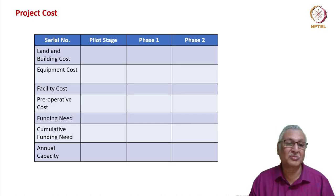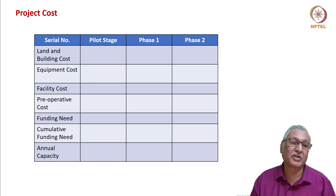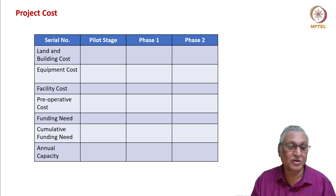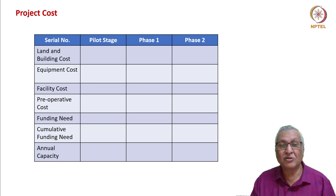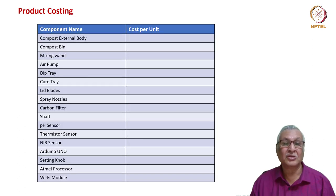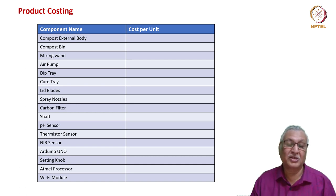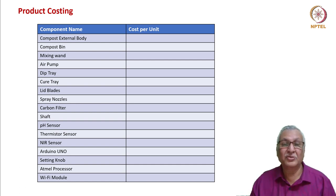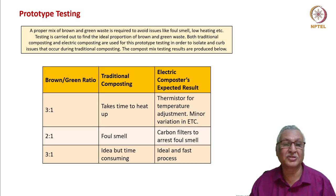Project cost is developed based on land and building cost, equipment cost, and facility cost, yielding pre-operative cost requirements. Funding needs are developed for pilot stage, phase one, and phase two on a cumulative basis, linked to annual capacity at each stage. Product costing is done component-wise, building value addition for each material and in-house or external conversion to arrive at overall product cost.